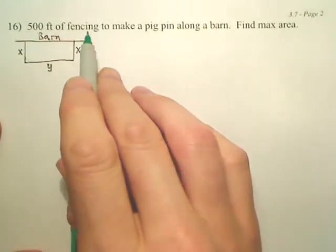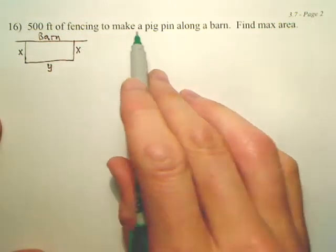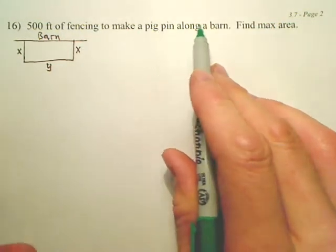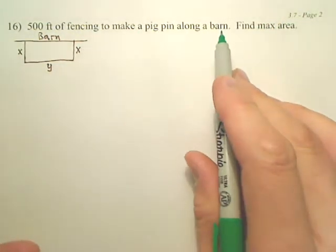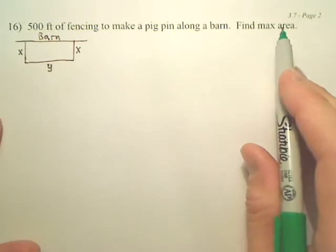Okay, for this 500-foot amount of fencing, that's your perimeter. You want to make a pigpen or horse corral. One side's a barn. Find the maximum area.